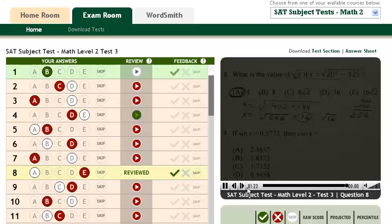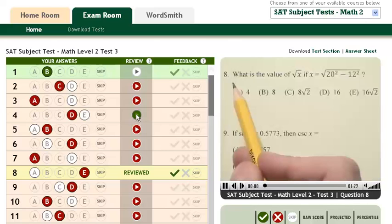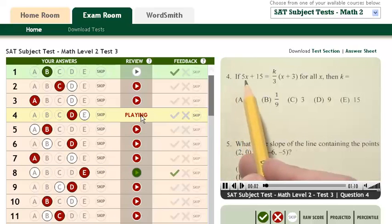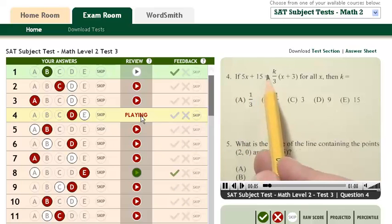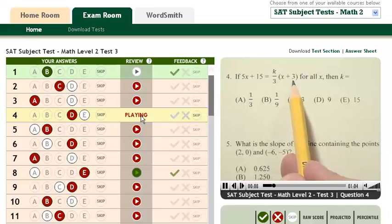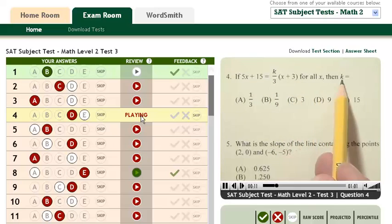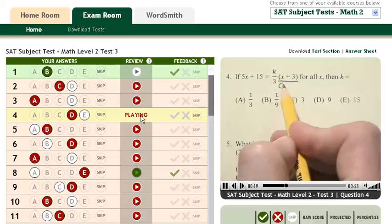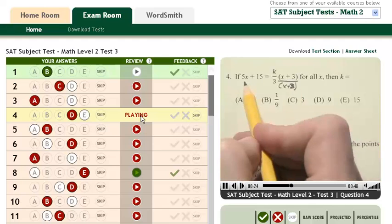If 5x plus 15 equals k over 3 times x plus 3 for all x, then k equals what? So let's take this equation right here and solve it for k. The first thing I would do is divide this side by x plus 3, and then divide this side by x plus 3. Over here, the x plus 3's would cancel, they're gone.